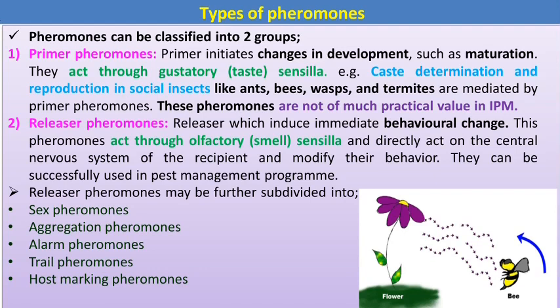There are two types of pheromones: primer pheromones and releaser pheromones. Primer pheromones initiate changes in development such as maturation. They act through gustatory receptors or sensilla. For example, caste determination and reproduction in social insects like ants, bees, wasps, and termites are mediated by primer pheromones. These pheromones are not of much practical value in IPM.